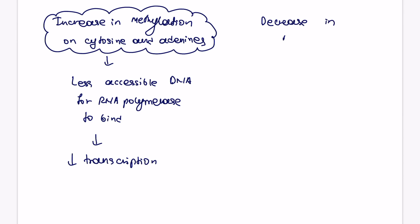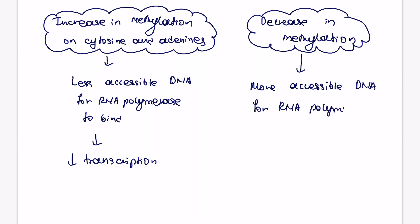But this can happen vice versa as well. So there could be a decrease in methylation happening on the cytosines and adenine. In this case, the DNA will be more accessible for RNA polymerase to bind, and therefore transcription will increase. And this is everything you need to know for methylation and how it changes the gene expression of DNA.